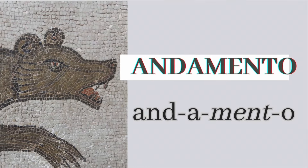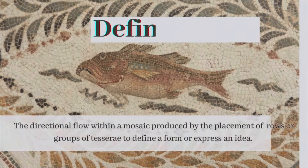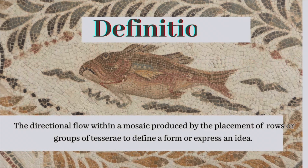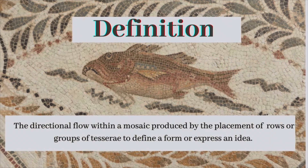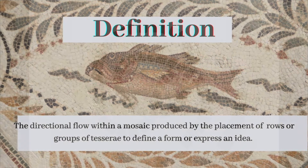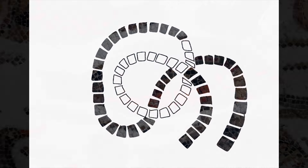Andamento is the directional flow within a mosaic produced by the placement of rows or groups of tesserae to define a form or express an idea.